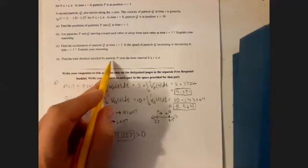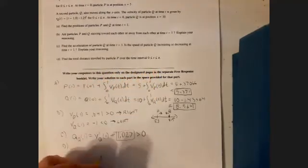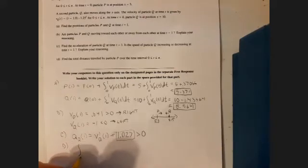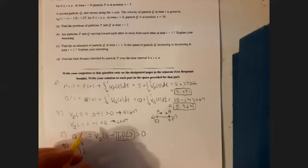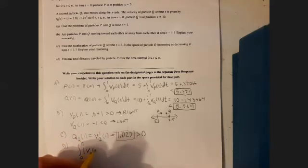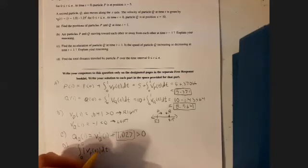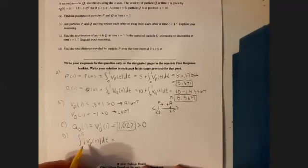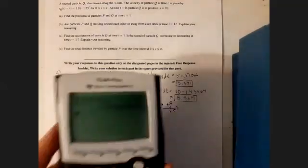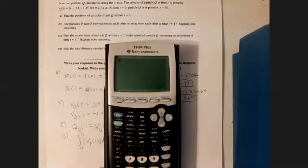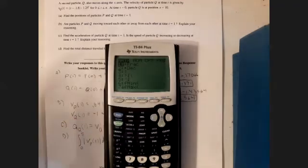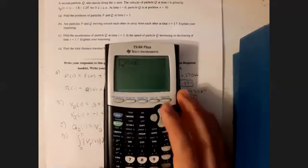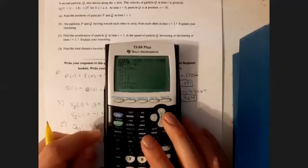Part D, find the total distance traveled by the particle P over the time interval 0 to pi. Remember, total distance traveled is the definite integral over the interval of the absolute value of the velocity function. So, absolute value V sub P of T from 0 to pi. It's sufficient to write down the integral. We've already defined what the velocity function is up here in the stem of the problem. Writing down the definite integral is sufficient, since we're going to be using the calculator to evaluate it, and it's permitted. You can't just write down the answer. You have to show the calculus notation for what you're using the calculator to calculate.